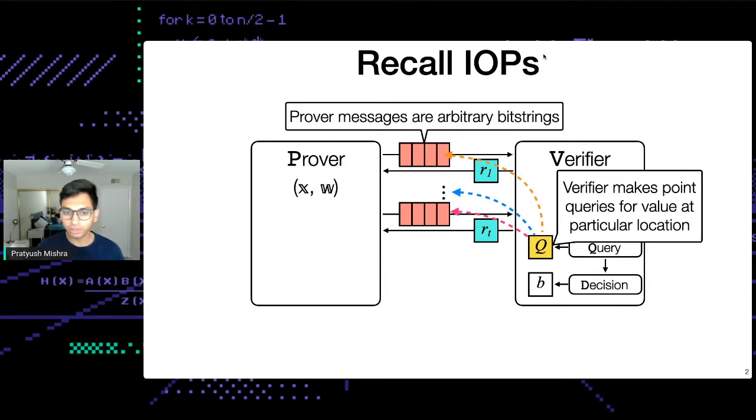The prover and verifier interact over some sequence of T rounds. At the end, the verifier can generate a query set to query the oracles — asking for the value of the oracle at a particular location. It takes the results of these queries and plugs them into a decision procedure to decide whether or not to accept.